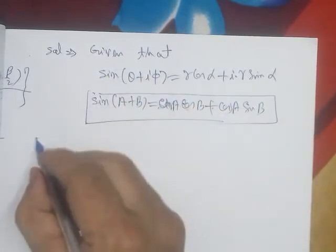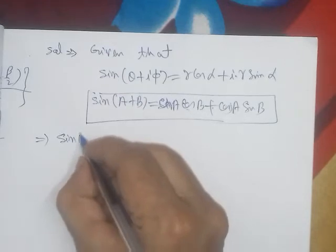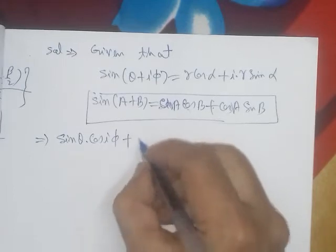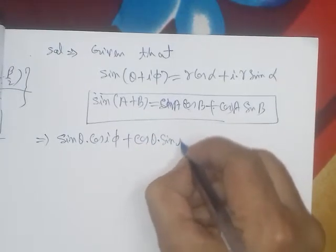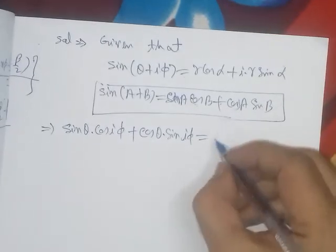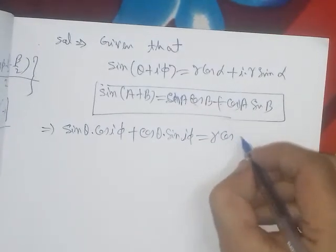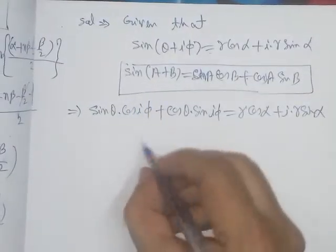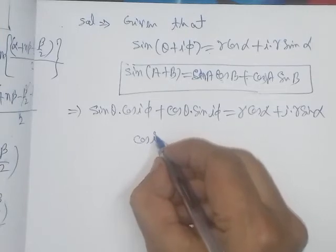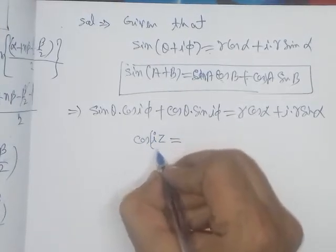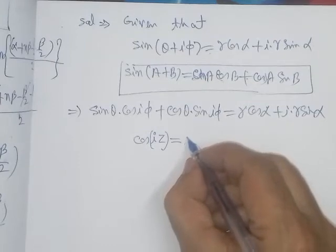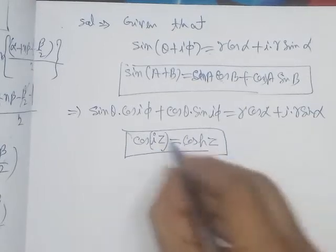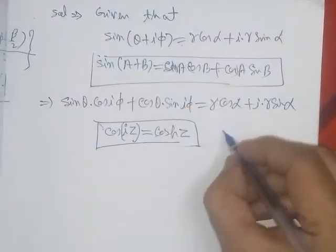Applying the sin(a + b) identity to the left-hand side: sin θ·cos(iφ) + cos θ·sin(iφ). On the right-hand side we have r·cos α + i·r·sin α. Now we note that cos(iφ) and sin(iφ) are circular functions of an imaginary argument, so we convert them using hyperbolic function identities.